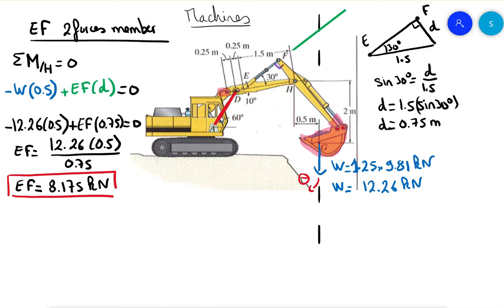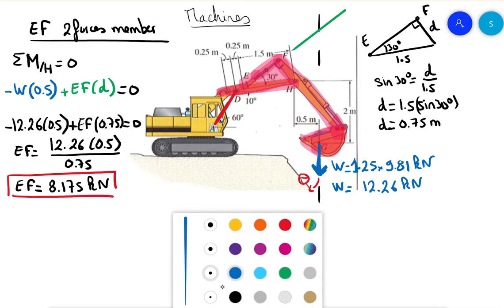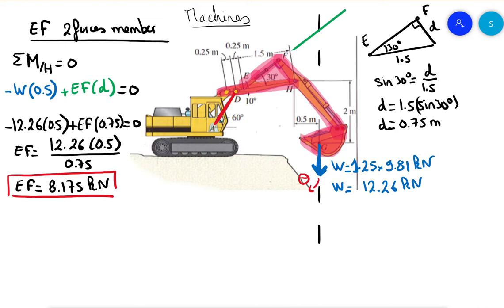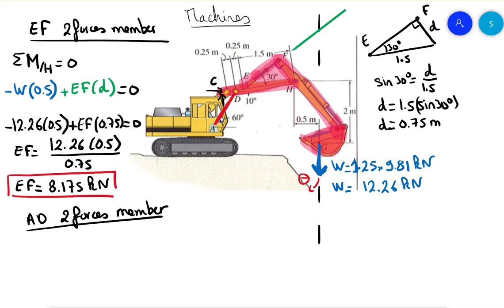We choose a body where the pin connections at E, F, and H are internal forces and are not included. The only external force included is the weight at G. Looking at our body, at point C we have two unknowns Cx and Cy, and at point D we have just one unknown because AD is a two-force member, so its direction is known. We take the sum of moments about point C equal to zero.